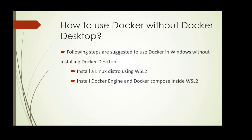We have seen why large enterprises cannot use Docker Desktop for free. Now let's see what is the alternative suggested by Docker. We can install a Linux Distro using WSL2. WSL is an abbreviation for Windows Subsystem for Linux. It's a feature which allows developers to run a GNU/Linux environment directly on Windows without the overhead of a dual boot setup or a VM. Then we can install Docker Engine and Docker Compose inside those Linux Distros and start using it.